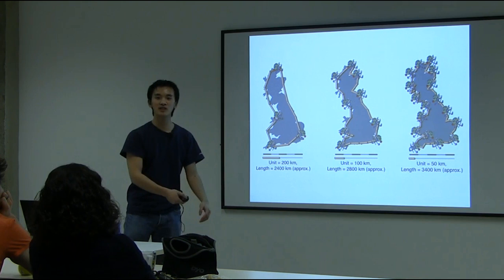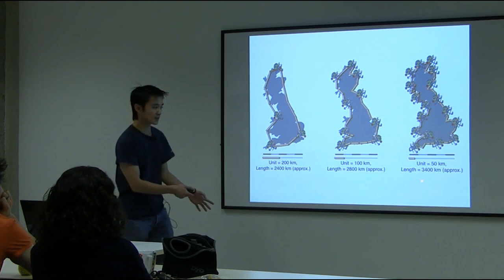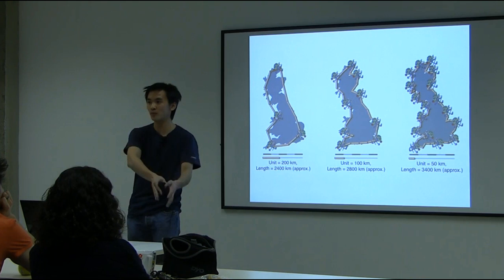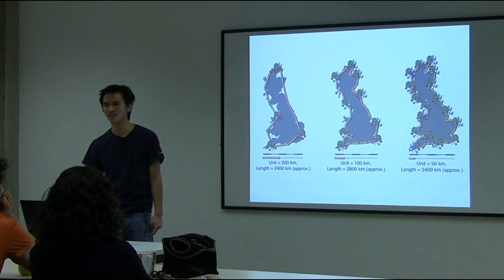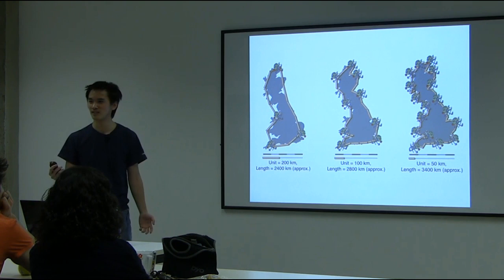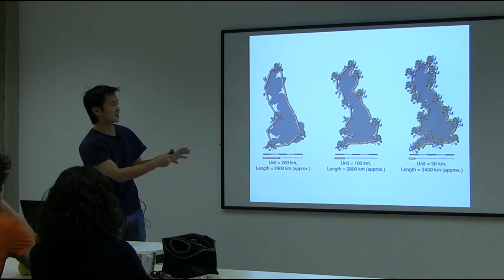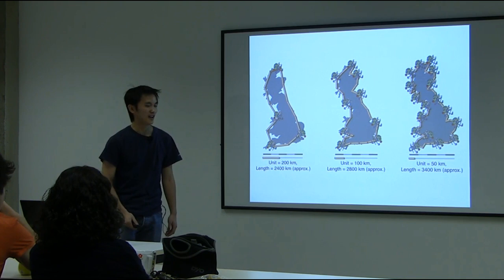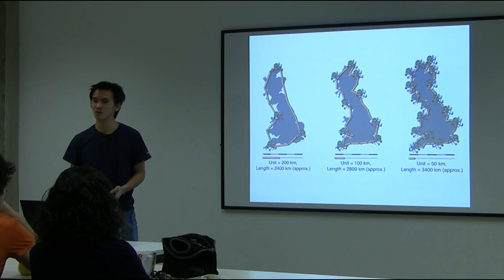And if you take an even smaller giant, it would take him even longer. In fact, this distance doesn't seem to converge to anything — it really goes to infinity. The smaller the person, the longer he'll have to walk. This is very disturbing because it seems like the British island, which is rather simple-looking, has a perimeter which is infinite. The shape seems finite, and yet the length of the perimeter is infinite.